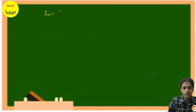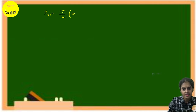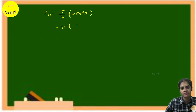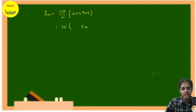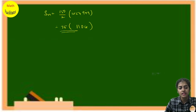With n = 150, S_n = (n/2)(a + l) = (150/2)(105 + 999) = 75 × 1104. Today's sums are a little complicated but follow the same structure. Calculate the final answer.